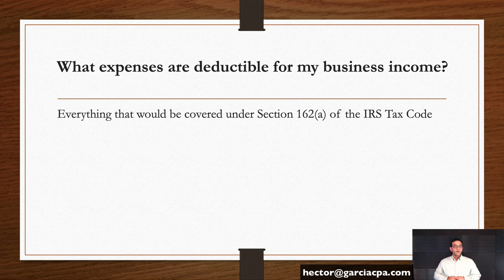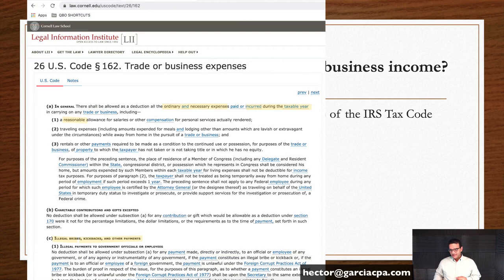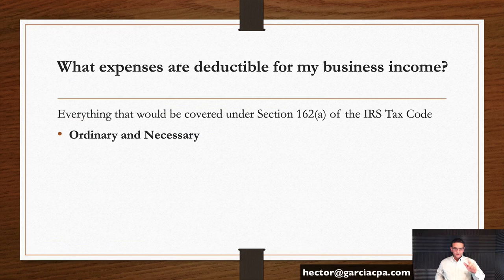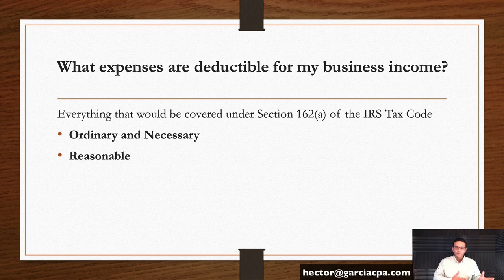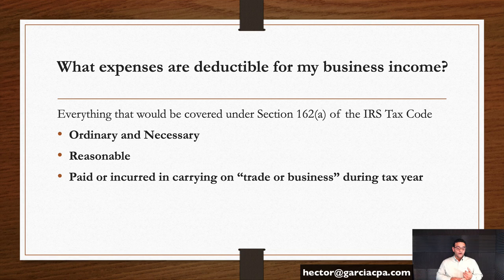So what expenses are deductible for my business? If we actually go to Section 162A of the IRS tax code, you're going to see these key words sprinkled throughout the code. Ordinary and necessary — that's a really important one, probably the most important one. Second, reasonable — the IRS doesn't do a great job explaining reasonable; this is actually a bit more subjective, and IRS auditors are people who will apply their own common sense during an audit. They also have to be paid or incurred in carrying on a trade or business during the tax year, and they have to be legal.